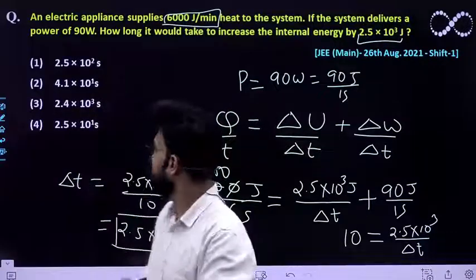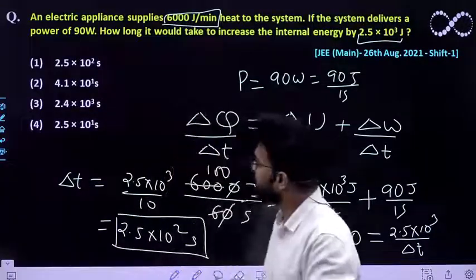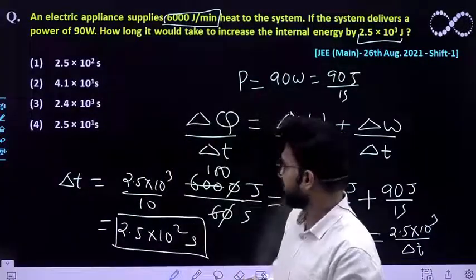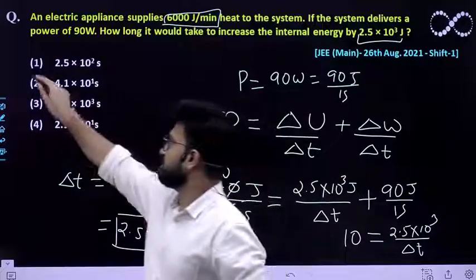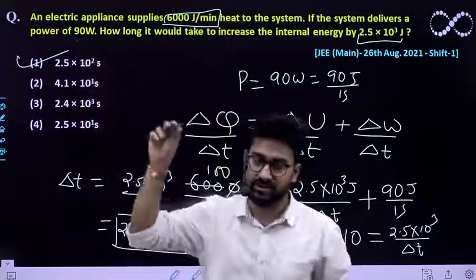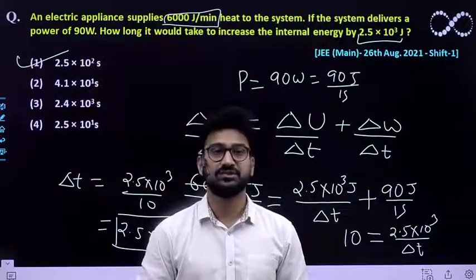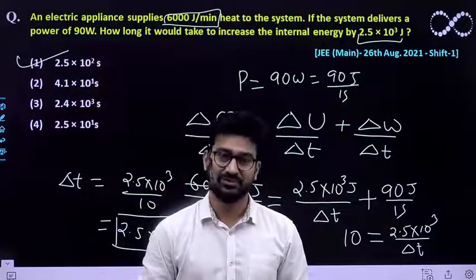Let us see which option is correct. So 2.5 × 10² is the correct option that we have got. I hope this question is clear to everyone. Thank you.